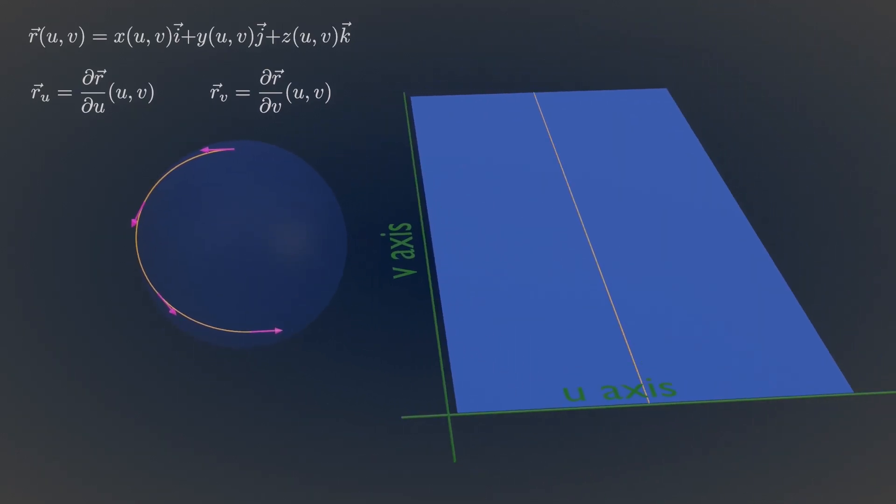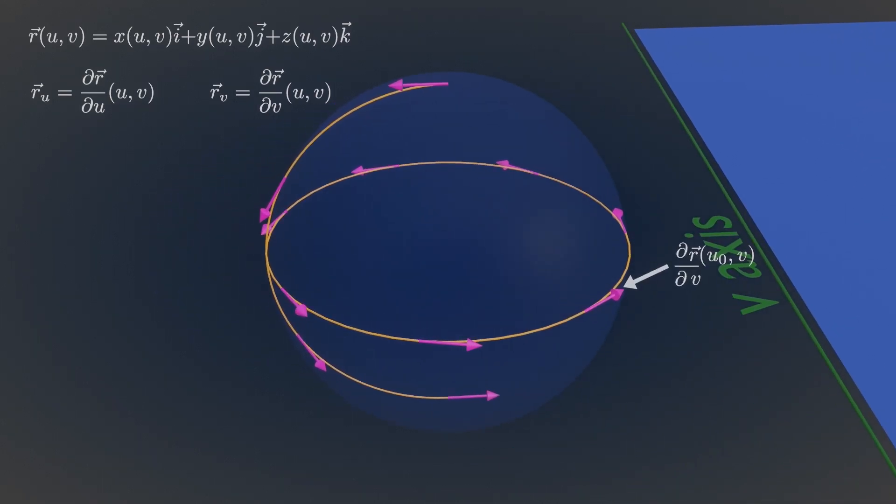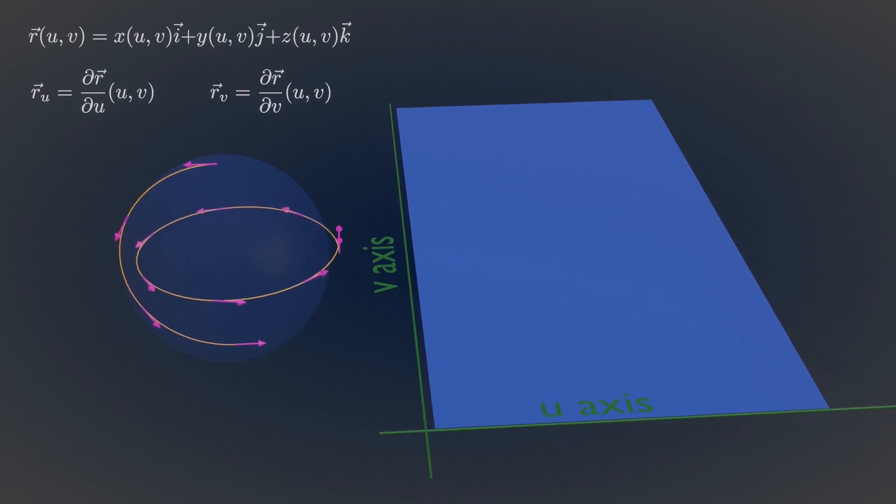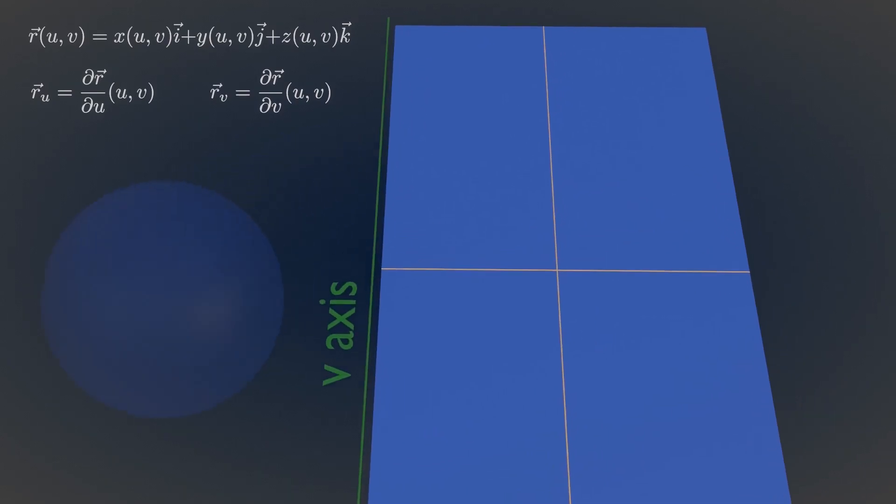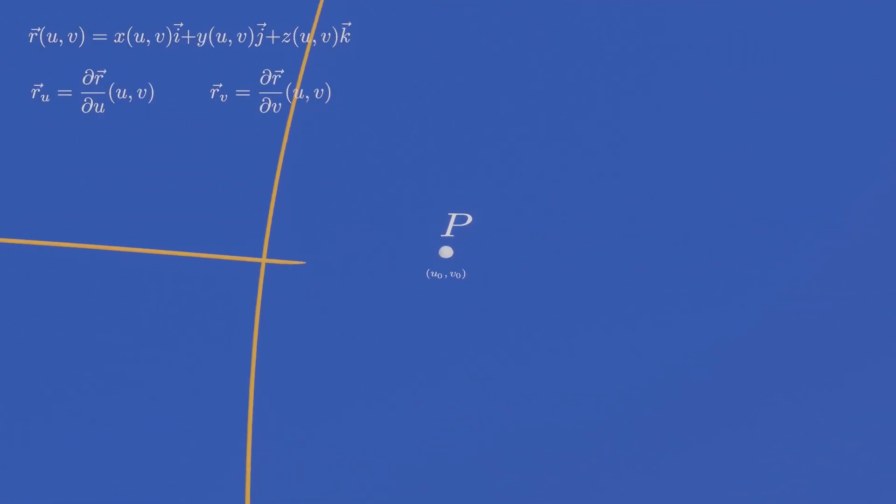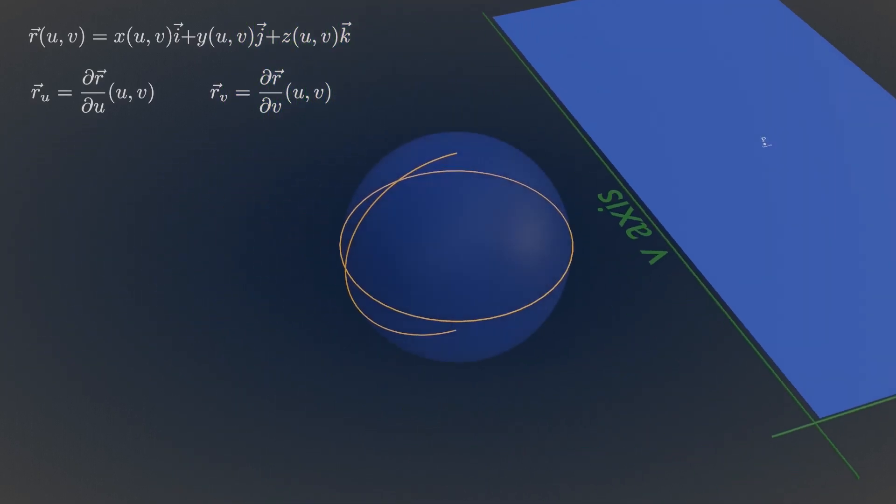The same goes if u is held constant. Now take any point in the UV plane. This point can be mapped to a point in surface in 3D space.